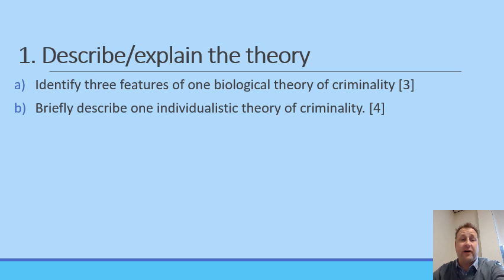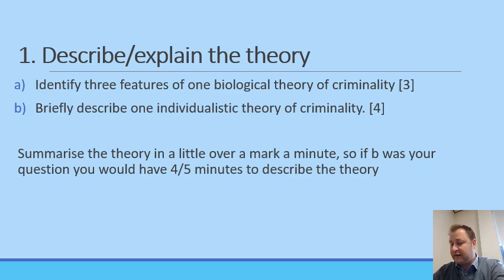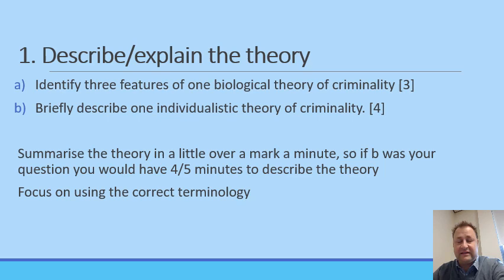The first type of question is 'describe or explain the theory.' These are past paper questions — I think you get questions up to six marks on this. Always think roughly a mark a minute, so for a five-mark question you've got around five minutes. Focus on using the correct terminology — that's what we need to see. If you can give made-up examples of how this could explain a crime, that is even better.